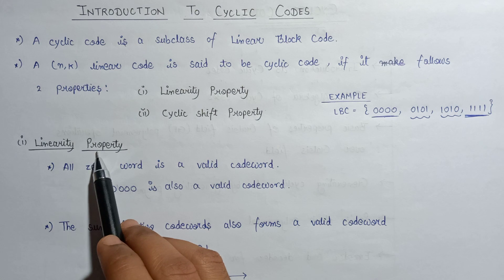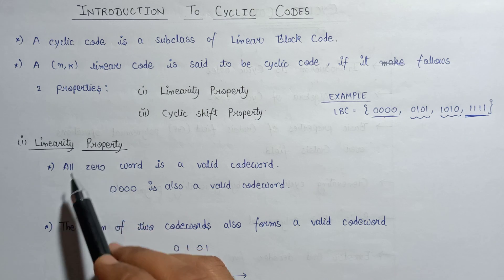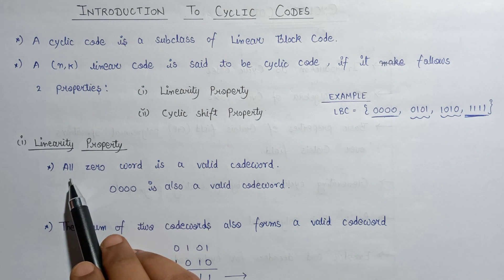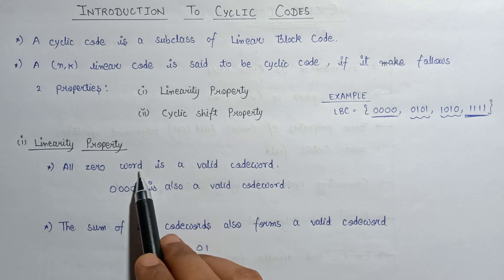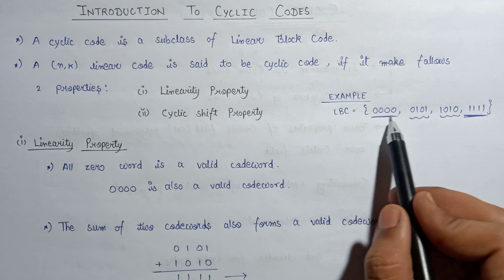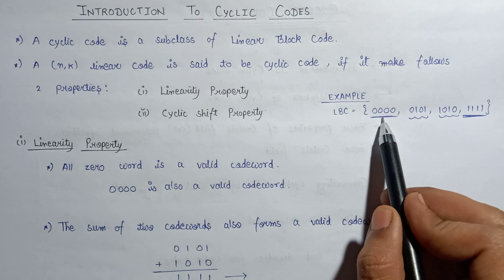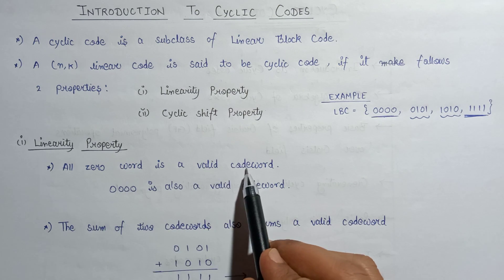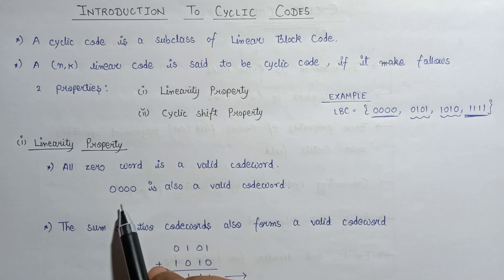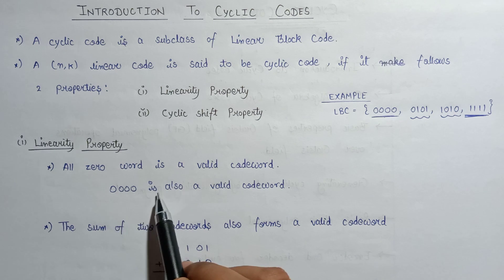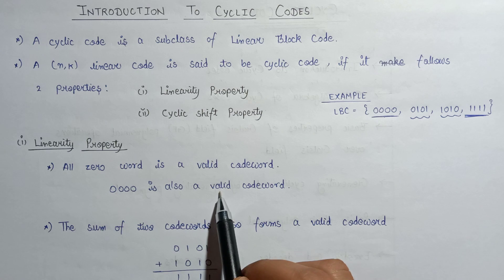The linearity property has three parts. According to the first part, all-zero word is a valid codeword. Here is the all-zero word given to us — according to this property it is a valid codeword, and 0000 is indeed present, so it satisfies this property.